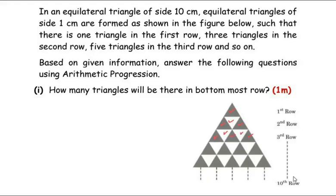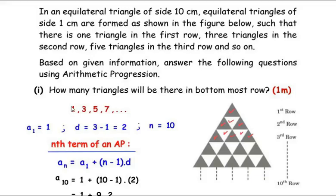The 10th row is the bottommost row because the side length of the big equilateral triangle is 10 cm, so it extends till 10 rows. We need to find how many triangles will be placed in the 10th row. The sequence of triangles per row is 1, 3, 5, 7, ... so the first term a₁ is 1.